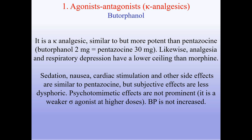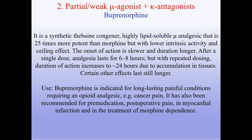Buprenorphine is a synthetic thebaine congener, highly lipid-soluble mu-analgesic that is 25 times more potent than morphine but with lower intrinsic activity and ceiling effect. The onset of action is slower and duration longer — after a single dose analgesia lasts 6–8 hours, but with repeated dosing, duration increases to 24 hours due to tissue accumulation. Uses: buprenorphine is indicated for long-lasting painful conditions requiring an opioid analgesic such as cancer pain. It has also been recommended for premedication, postoperative pain, myocardial infarction, and treatment of morphine dependence.